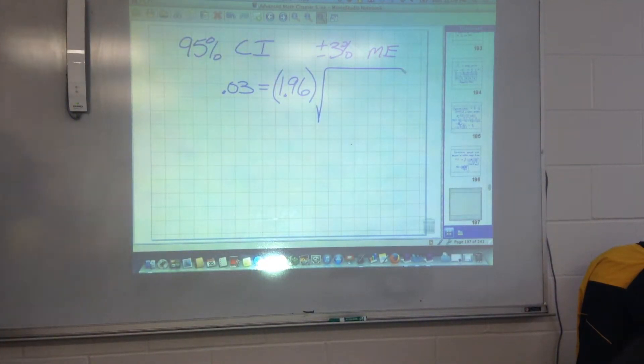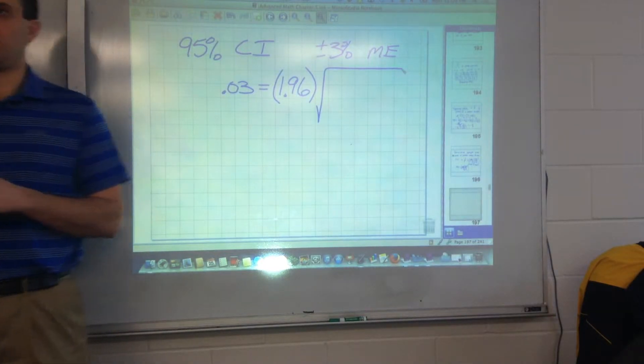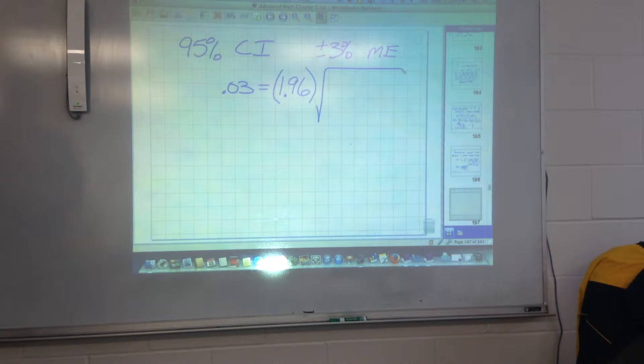That's how many standard deviations away from the middle you'd have to go to include 95% of the data. So z star, in this case, is 1.96 times the square root. Now, we haven't done our poll yet, so we don't know what p hat and q hat are. Now, worst case scenario, they're both 0.5. They're both 0.5, so that's what we'll use here.